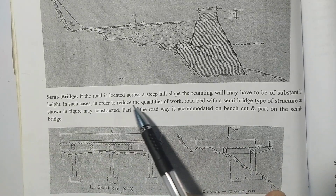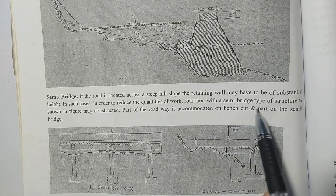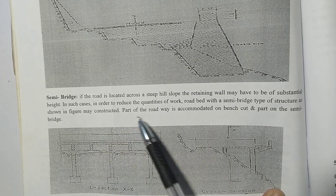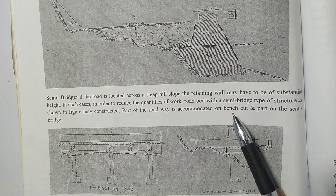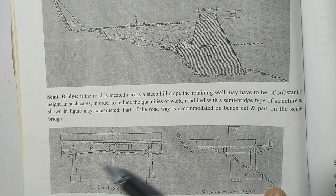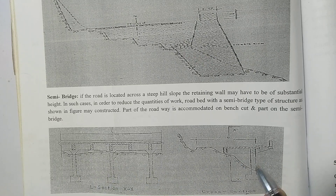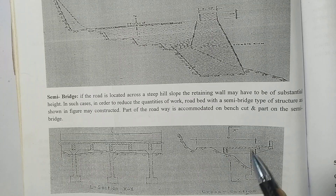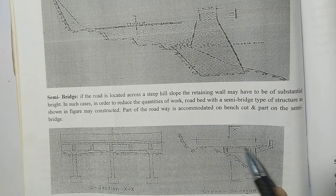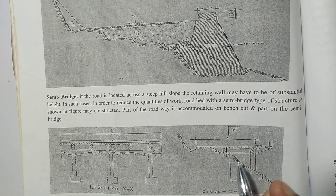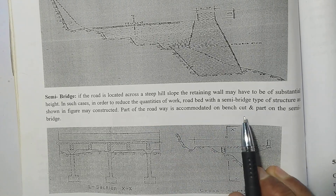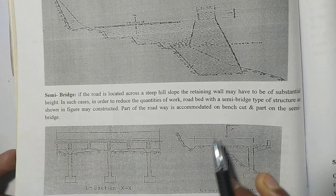When the road is located across a steep hill slope, the retaining wall may have to be of substantial height in terms of the roadway. In such cases, in order to reduce the quantities of work, a road bed with a semi-bridge type of structure is constructed. Part of the roadway is accommodated on the bench cut and part on the semi-bridge.